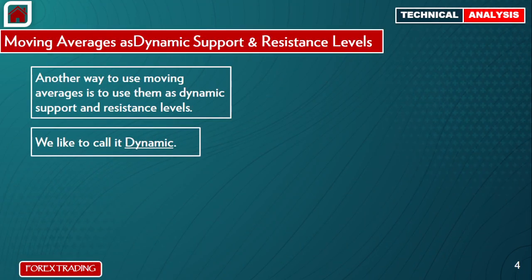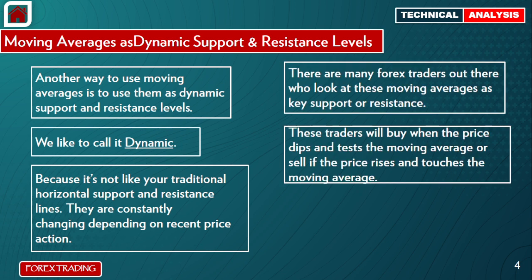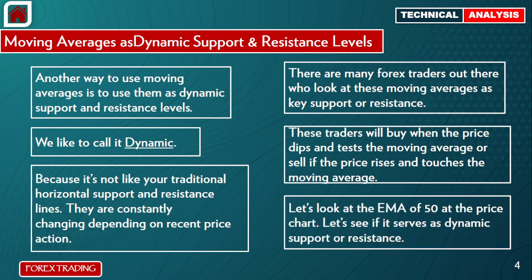Another way to use moving averages is as dynamic support and resistance levels. We call them dynamic because they are always changing — these are not traditional horizontal support and resistance levels. They change depending on recent price action. Many Forex traders look at moving averages as key support and resistance, buying when the price dips and tests the moving average, or selling when the price rises and touches it.